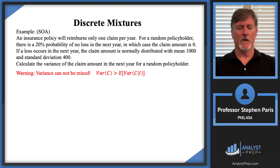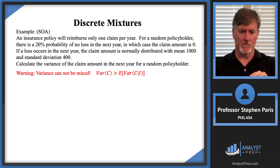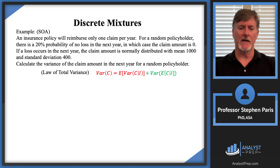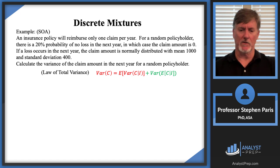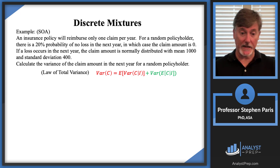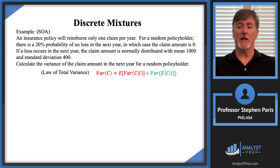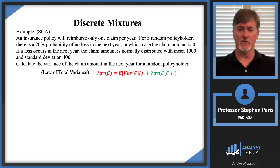Not only that — this is the cool part. I know exactly by how much it's less. Mixing the variances is less than the true variance exactly by the variance of the expected value of the claim amount given the indication. So I get an equality in this discrete case. This is referred to as the law of total variance.